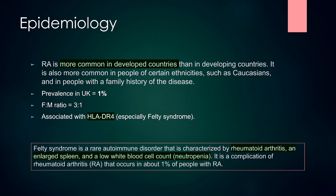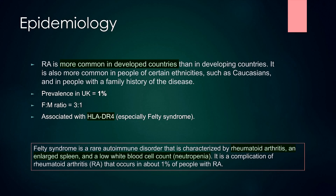The question arises: what is Felty syndrome? Felty syndrome is a rare autoimmune disorder characterized by rheumatoid arthritis, enlarged spleen and a low white blood cell count or neutropenia. You need this triad to diagnose Felty syndrome. It is a complication of RA that occurs in about 1% of people with RA. Felty syndrome occurs mostly in males, and the treatment is the same as RA — immunosuppressive therapies including steroids, methotrexate, DMARDs and TNF-alpha inhibitors.